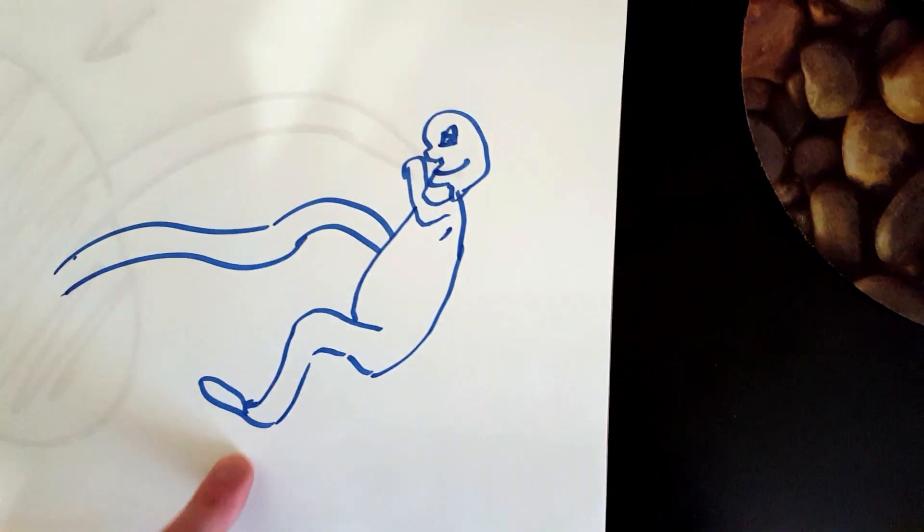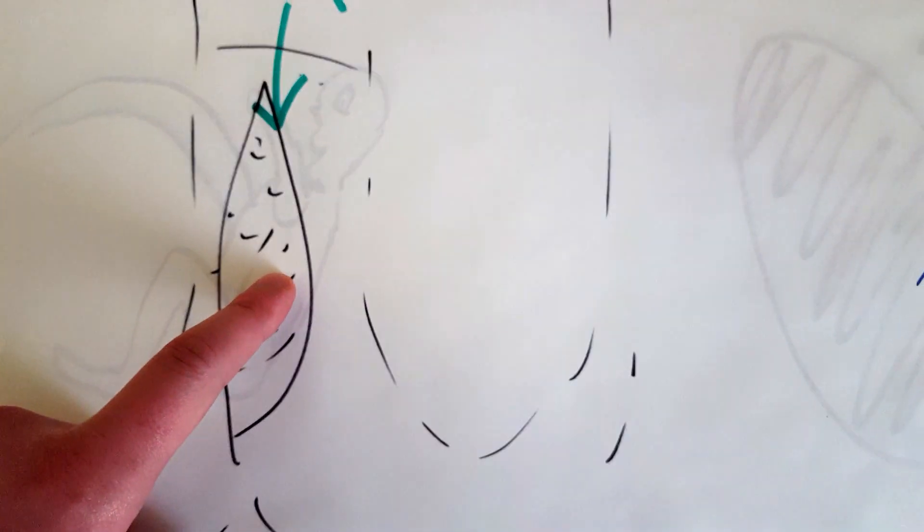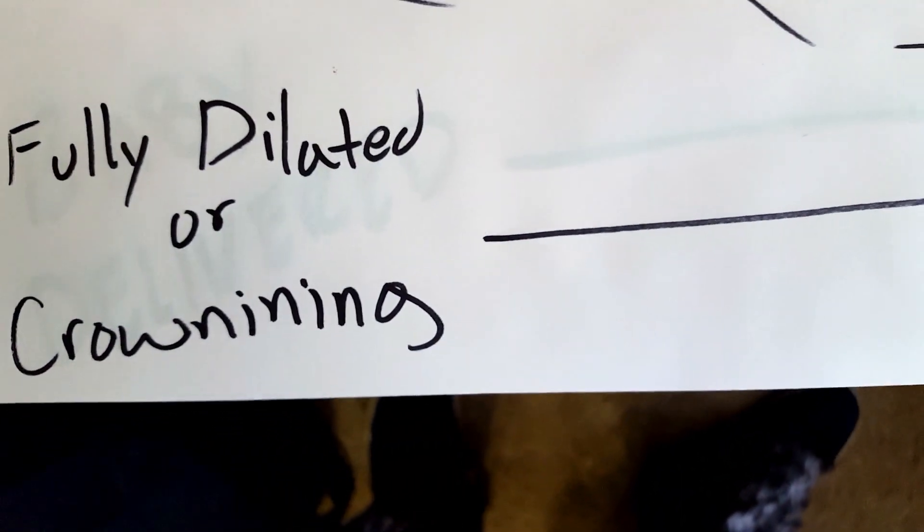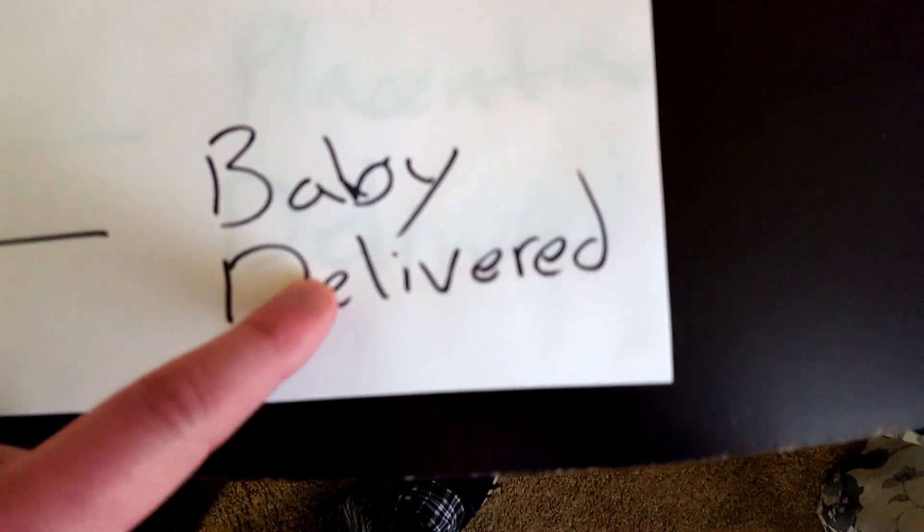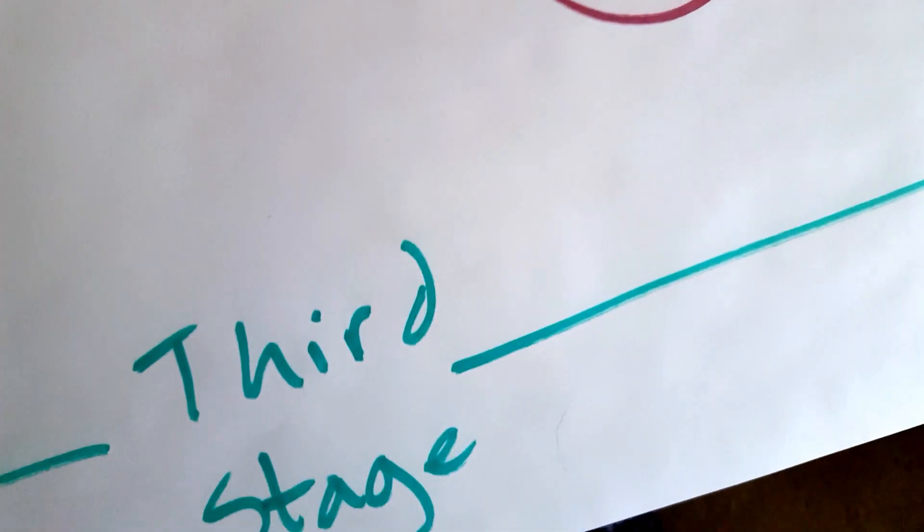Stage two is from full dilation or crowning to the delivery of the baby. Full dilation or crowning—it's the same thing, either one—to baby delivery. That is stage two, the second stage of the labor process.